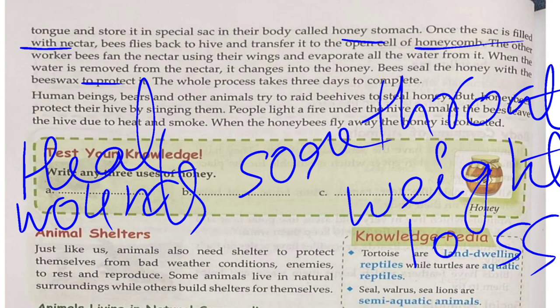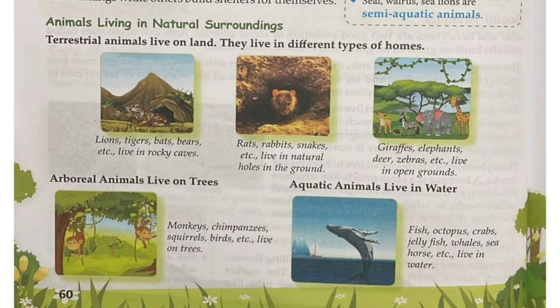Animal shelters: just like us, animals also need shelter — to protect from bad weather, to stay safe from enemies, to rest, and to reproduce. Tortoises are land-dwelling reptiles while turtles live in water; sea walrus and sea lions are semi-aquatic. Animals living in natural surroundings: lions, tigers, bats, and bears live in rocky caves; rats, rabbits, and snakes live in natural holes; giraffe, elephant, deer, and zebra live on open ground.